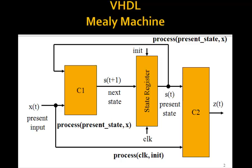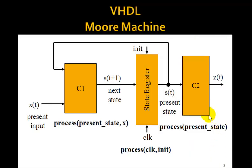Here was the block diagram we had for a Mealy machine. To implement this in VHDL, you'll write a process for C1, in which the sensitivity list will contain the present state and the input X. You'll also have a separate process for the state register, in which the inputs are clocked — I call it init here, usually we call it clear. And then there'll be a third process for C2, in which the sensitivity list contains the present state and the input X. For a Moore machine, the only difference is that C2 will have a process in which the sensitivity list contains only the present state, because a Moore machine's output depends only on the present state.